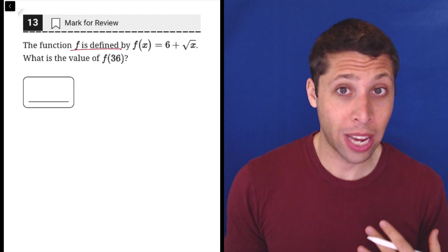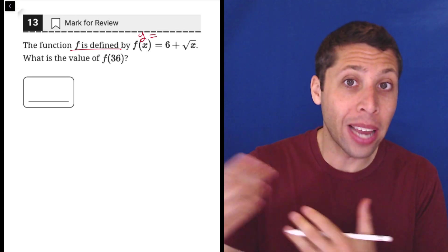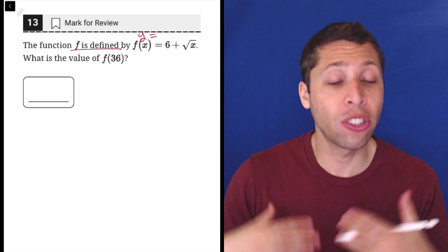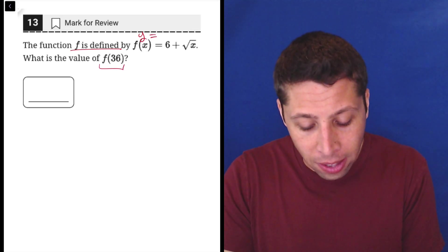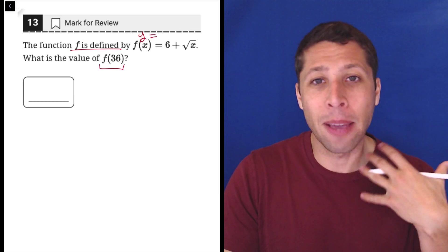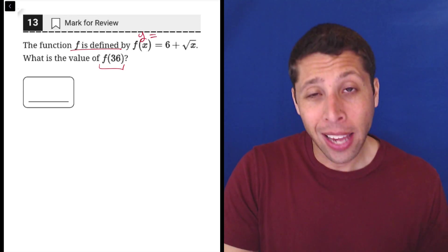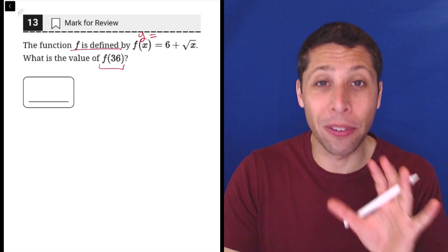This is what's called function notation. Basically, instead of putting y equals here, we put f of x equals. It's just another way of writing the exact same thing. And the reason we do that is so that we can talk about that line or that equation in a much more mathematical way. For mathematicians, this is easier, even if for you it feels harder.